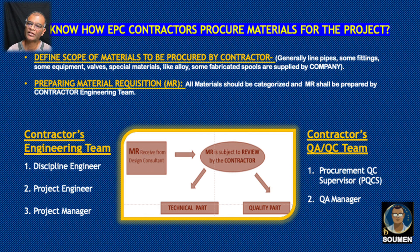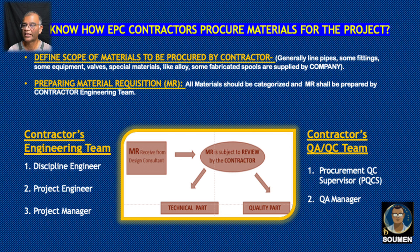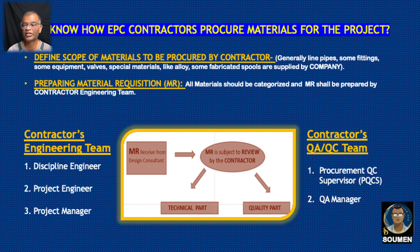Let's go into a little more detail on the sub-processes. The first step is to define the scope of materials to be procured by the contractor. Generally, line pipes, some fittings, equipment, valves, special materials like alloys, and some fabricated spools are supplied by the company. Then preparing the Material Requisition (MR): all materials are to be categorized, and the MR shall be prepared by the contractor engineering team. Flanges, for example, will all be ordered generally in one MR.